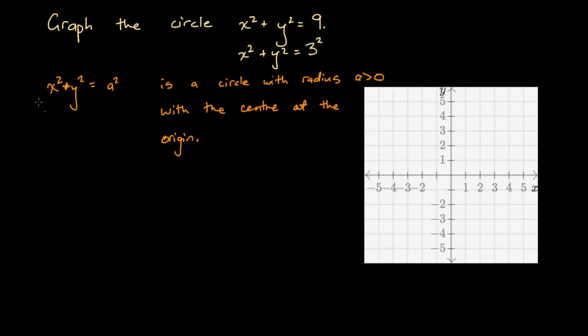That looks very much like this form that we've written in orange. So here we could say that x squared plus y squared equals 3 squared is a circle with radius 3, so 3 units is the radius, with the centre at the origin.